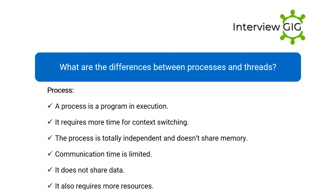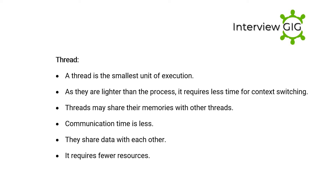What are the differences between processes and threads? A process is a program in execution. It requires more time for context switching, is totally independent, doesn't share memory, has limited communication time, does not share data, and requires more resources.